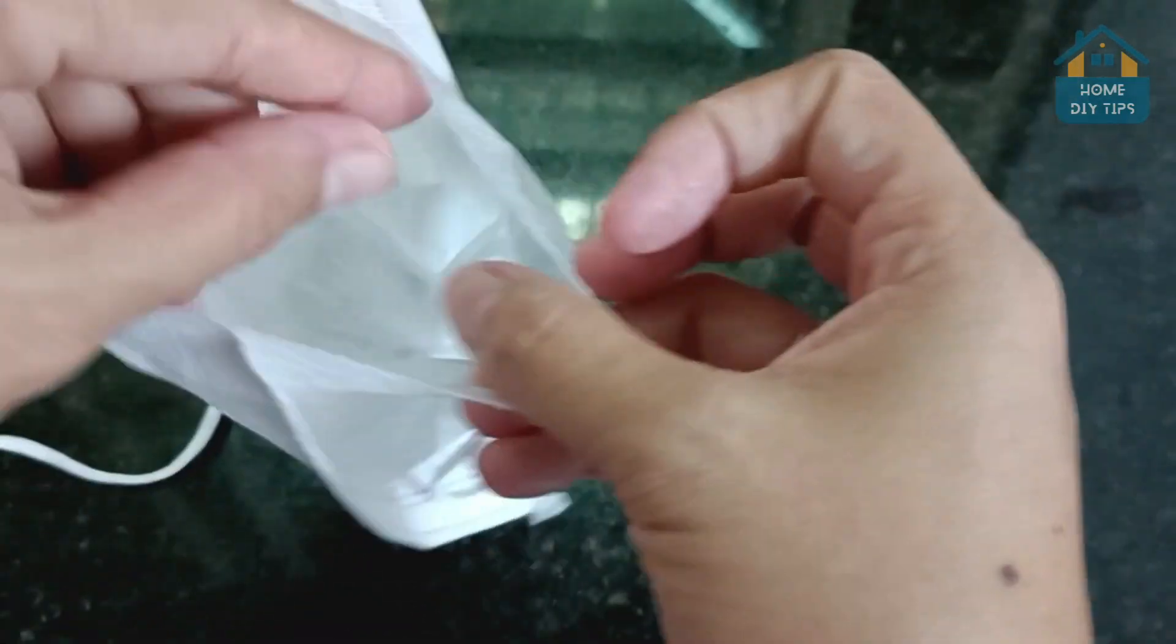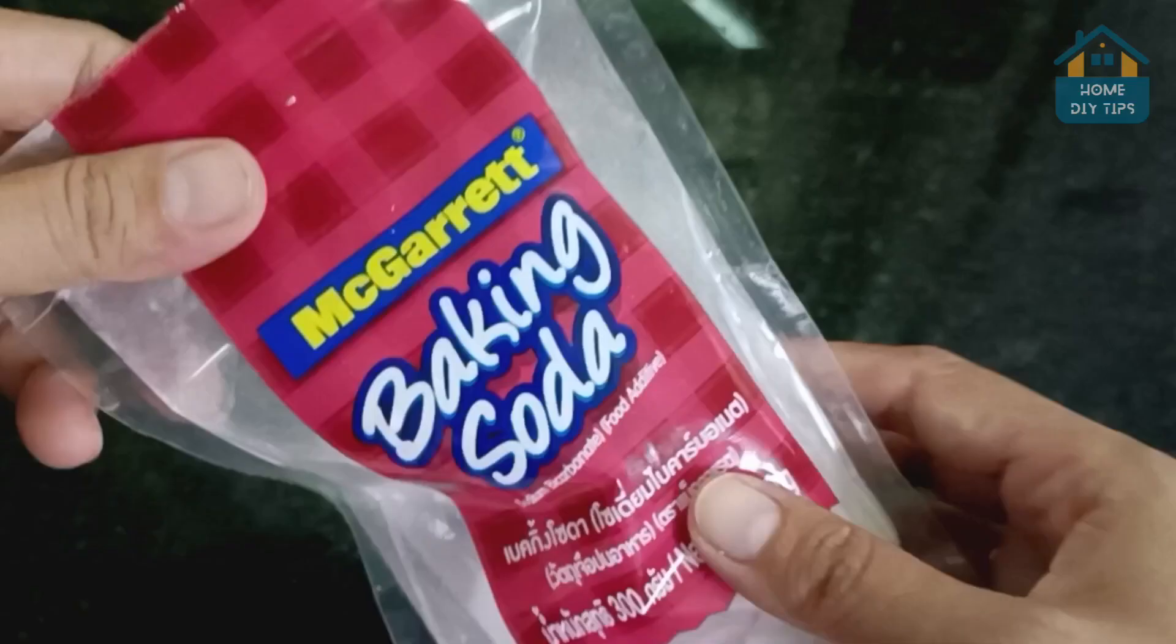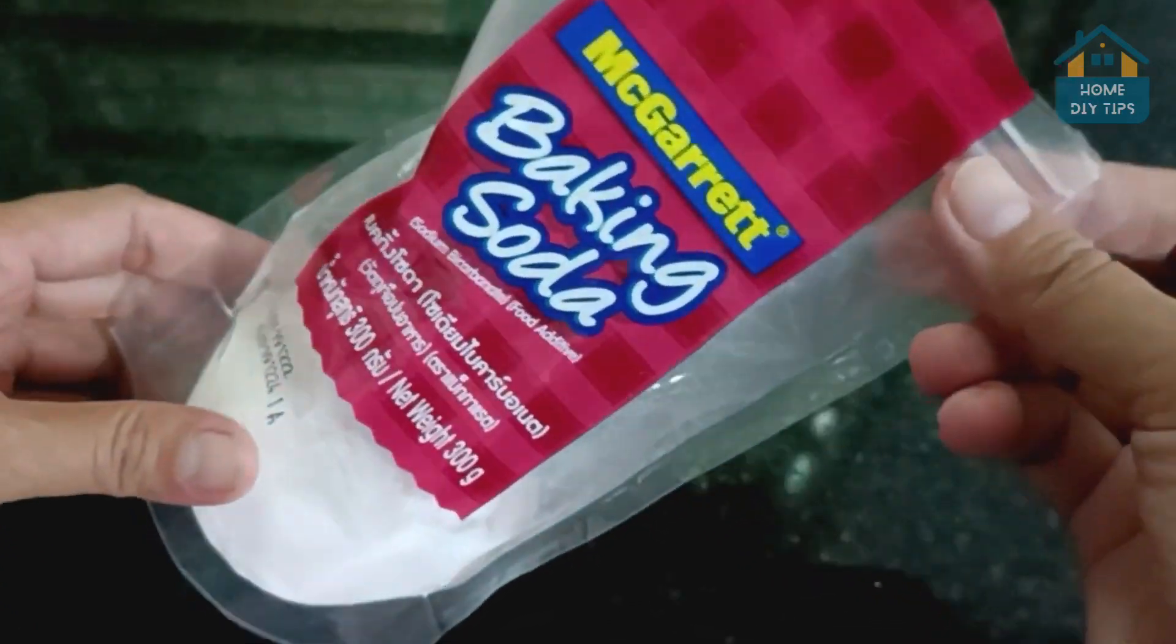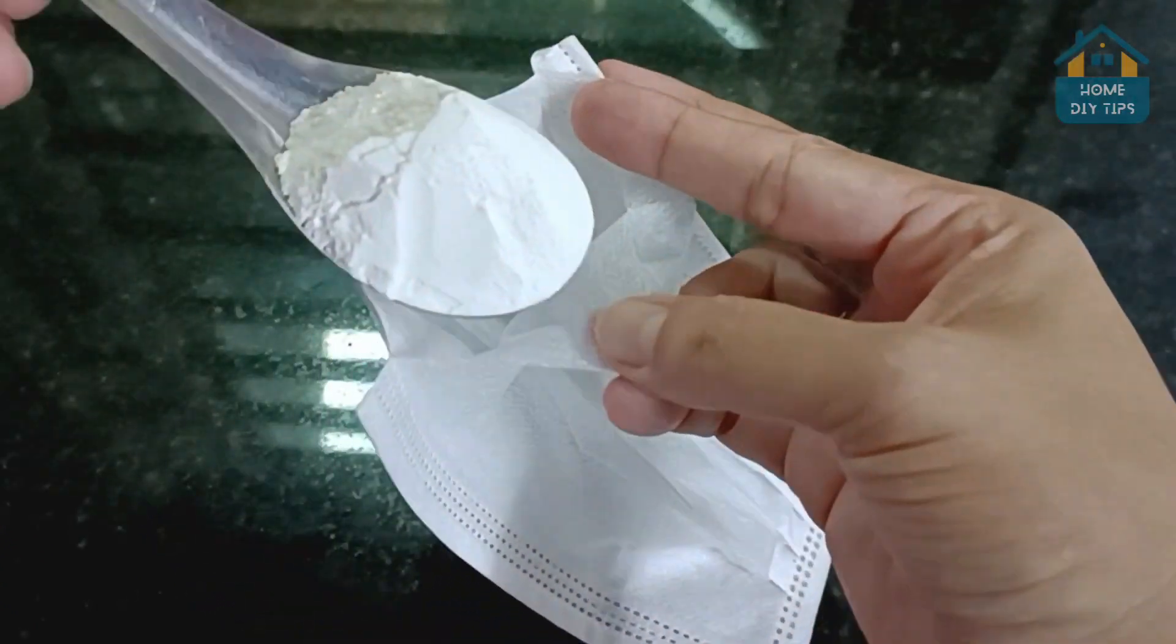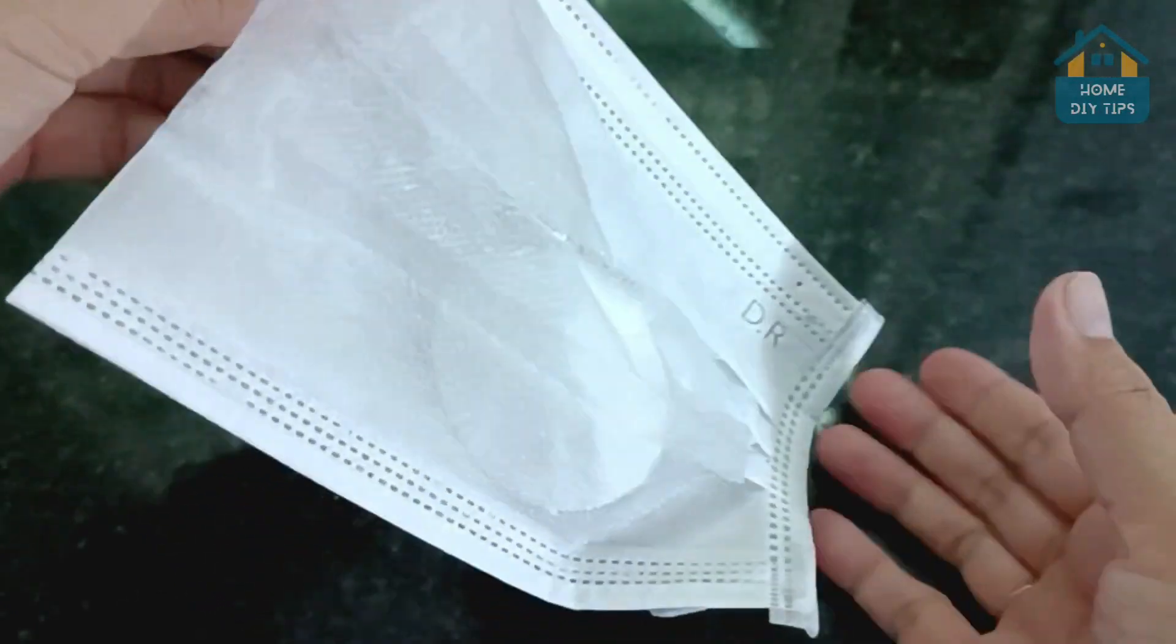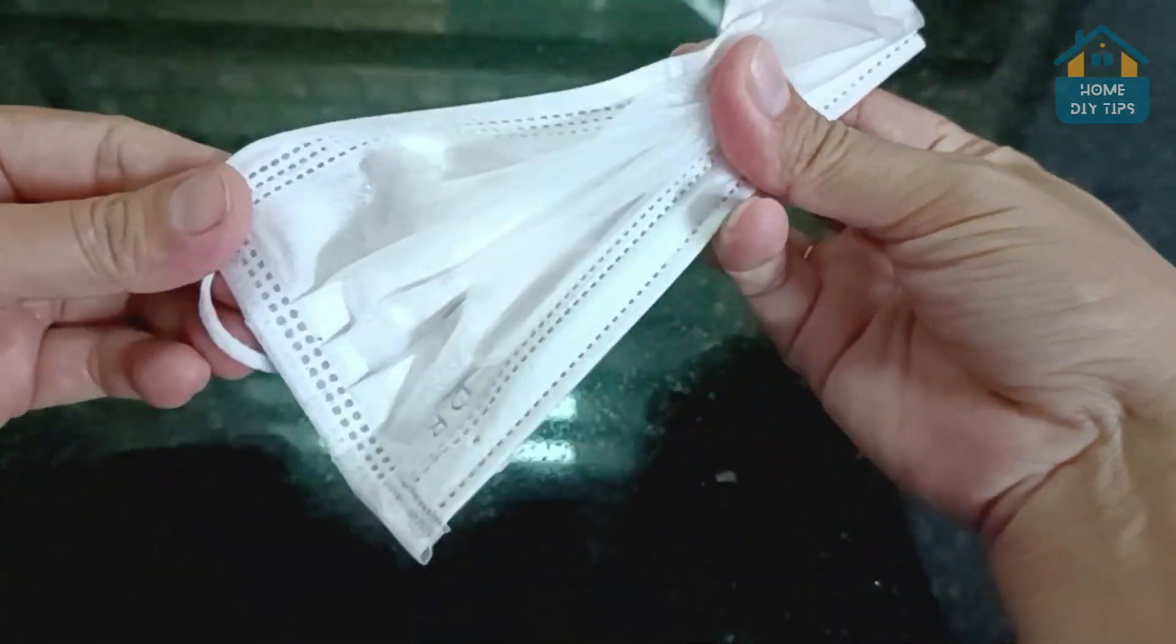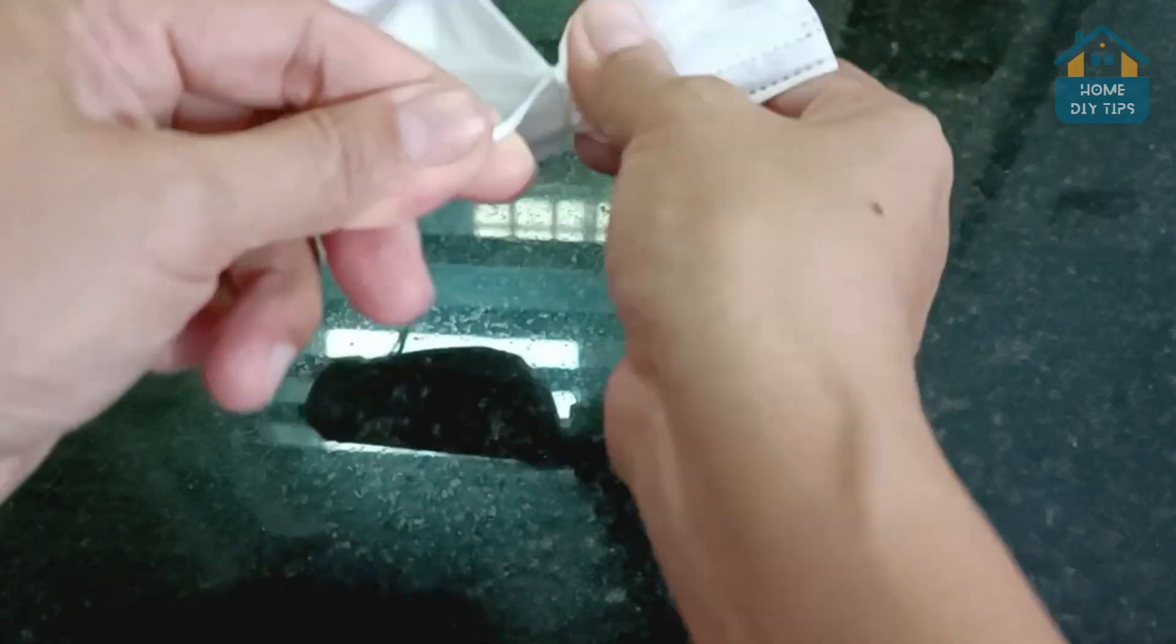Now, we've got two options for filling it. The first one is using this white powder. I'll reveal what it is in just a moment. Pour a generous amount into the pocket that's formed and then seal it shut at the top using the ribbon you cut off earlier. Make sure nothing can escape.